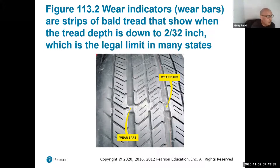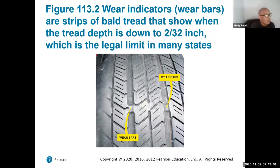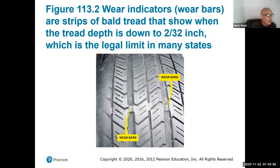These are called wear bars. These wear bars are actually part of the tire and show you at 2/32nds what's left on the tire. If it scrubs across flat on this part, you know for sure that your tires need to be replaced. You really don't want to go too much farther than that because there's not enough traction, and if you get a nice wet day you may be spinning around doing silly stuff.